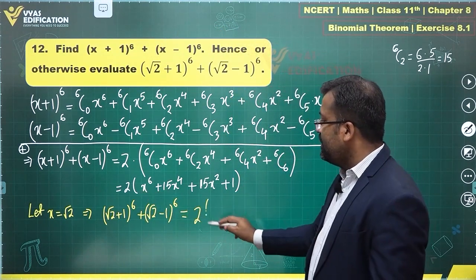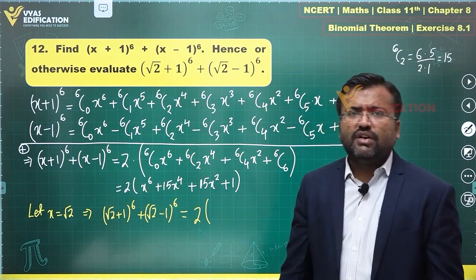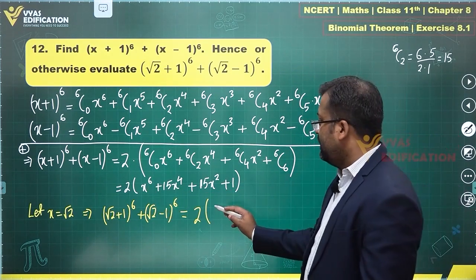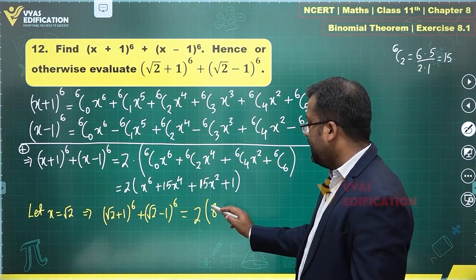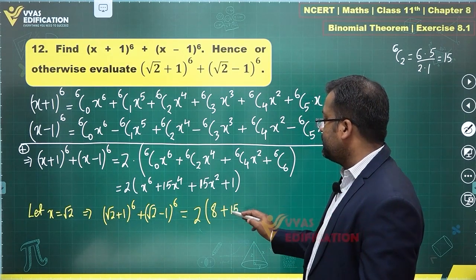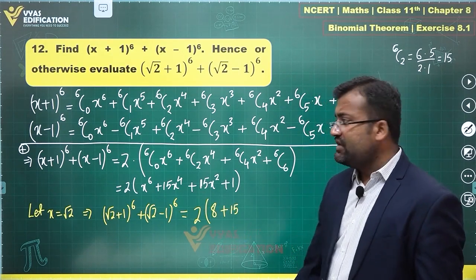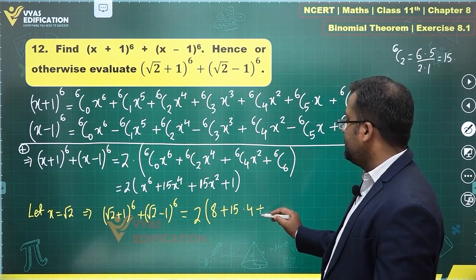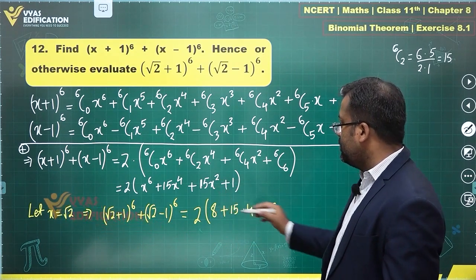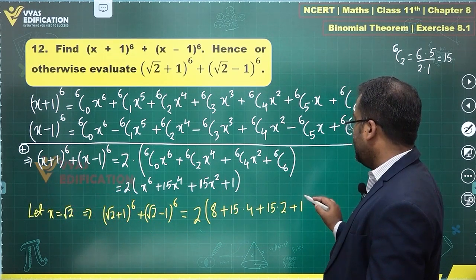(√2+1)^6 + (√2-1)^6 is equal to twice of this expression. What is that? (√2)^6. (√2)^6 is 2^3, which is 8, plus 15·(√2)^4, which is 2^2, which is 4, plus 15·(√2)^2, which is 2, plus 1. This is what you get.